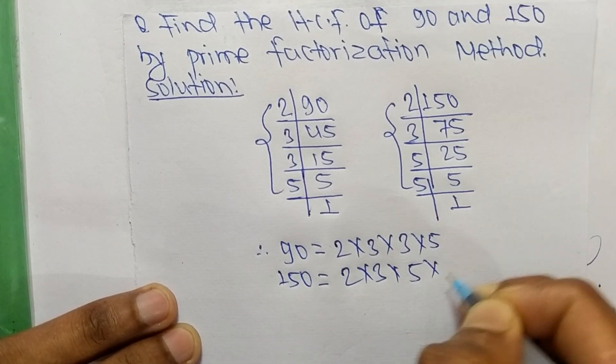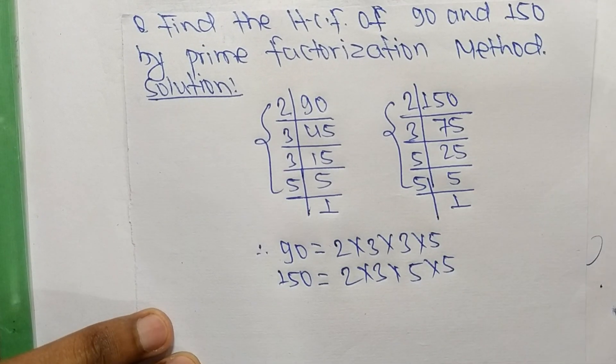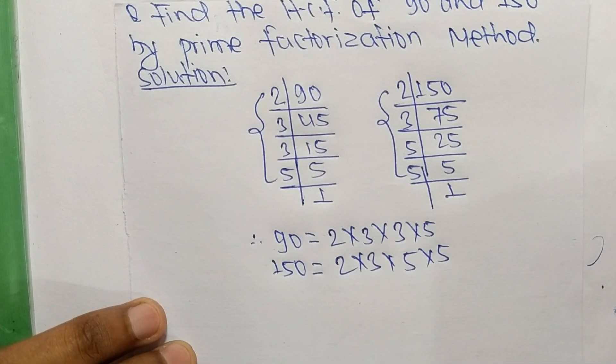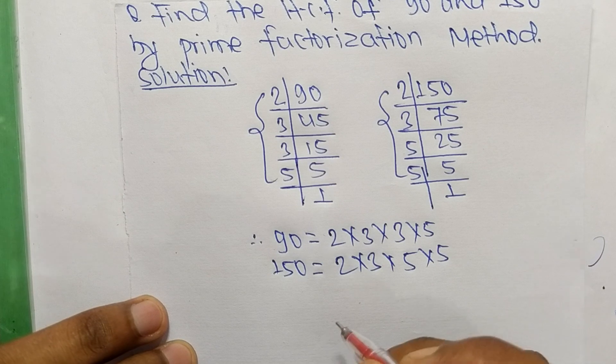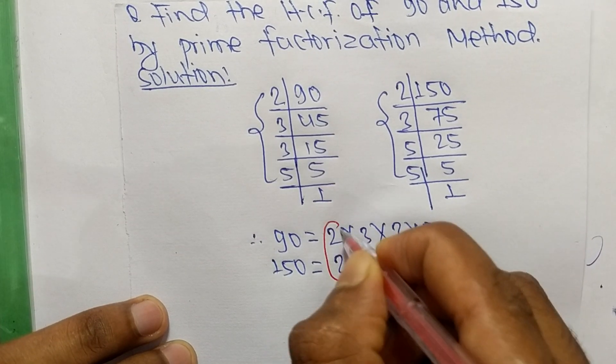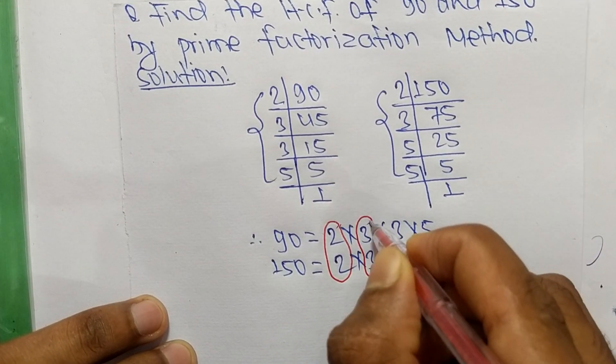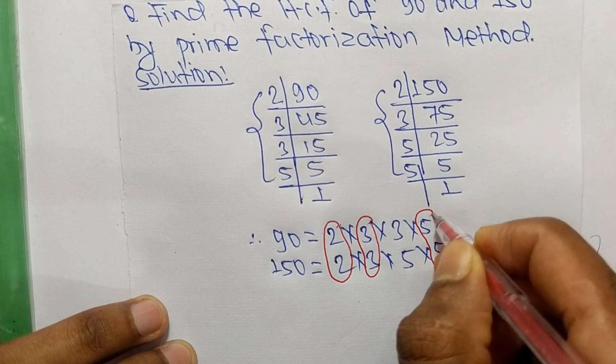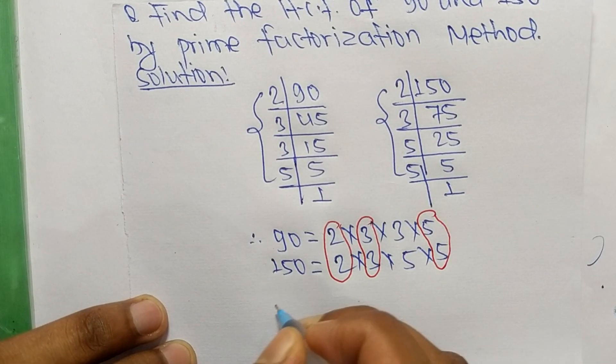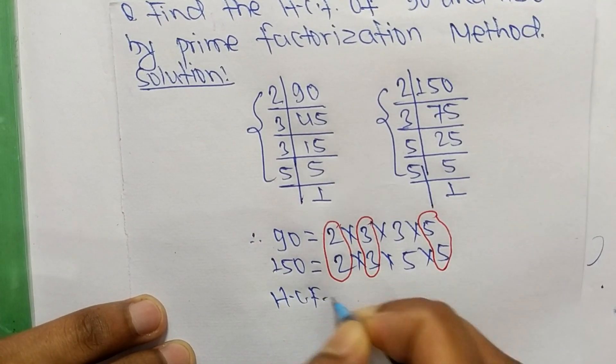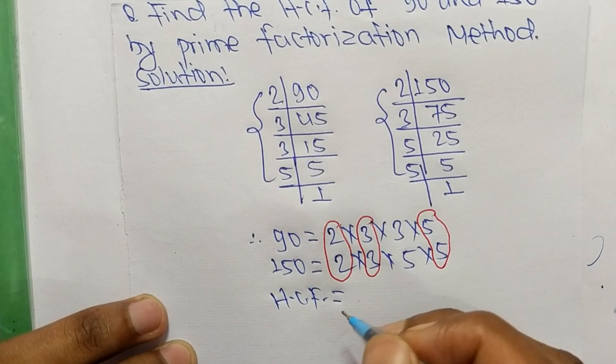Now we select the common factors in these prime factors. The first common factor is 2, second is 3, and third one is 5. So the HCF equals the product of common factors.